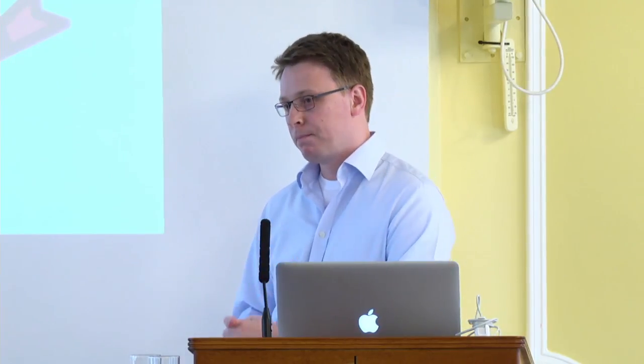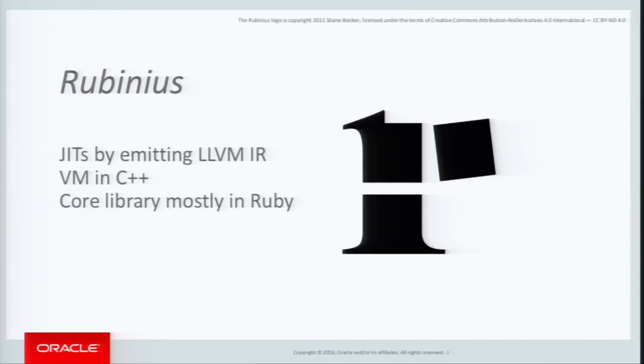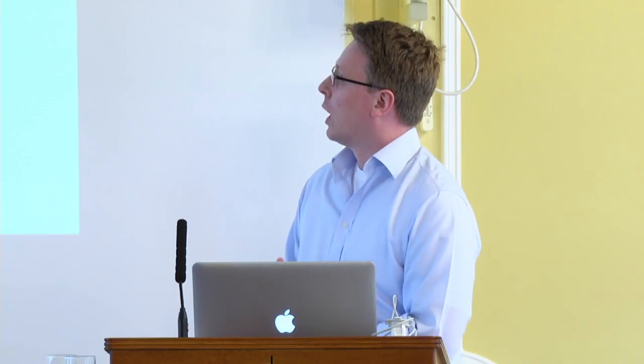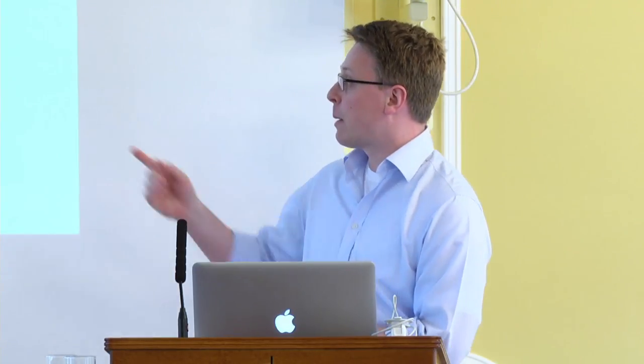The other main alternative is called Rubinius, based on the Blue Book implementation of Smalltalk. It JITs by emitting LLVM IR — LLVM is a compiler infrastructure as a library producing machine code. The VM is written in C++, but really interestingly the core library is actually implemented in Ruby. In JRuby, the core library is mostly implemented in Java — when they started, they literally translated the runtime from C into Java.